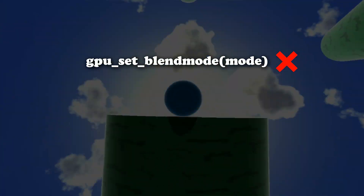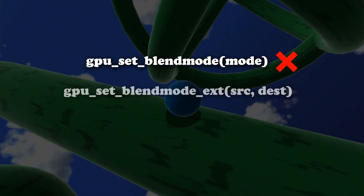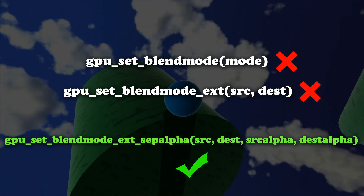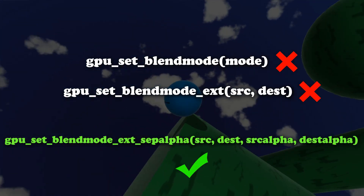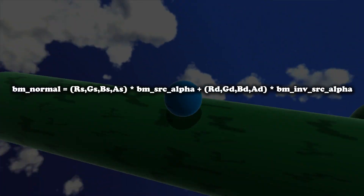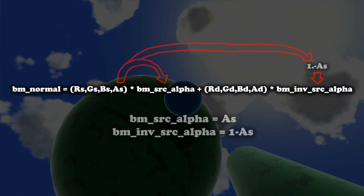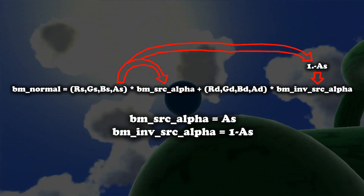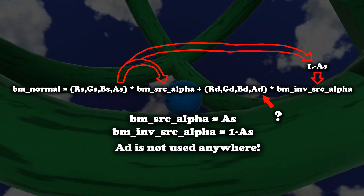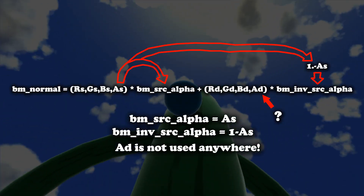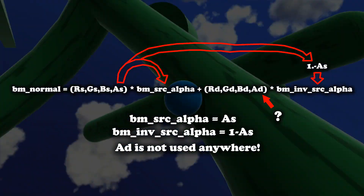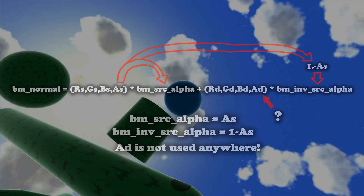So let's forget the regular GPU set blend mode and work exclusively with the extended version — this function. This is the extended blend mode function which gives you separate control over how the alpha channel is blended. Remember how regular blending used the source alpha to smoothly interpolate between source and destination? Well, what about the destination alpha? This value is actually not used for anything by default — it's just there. But we can make use of it. You can think of the destination alpha as a secret variable that is not shown, but you can write to it and read from it when you need.